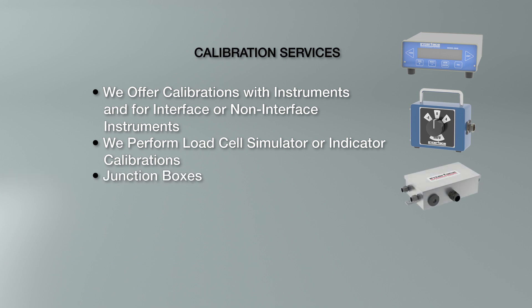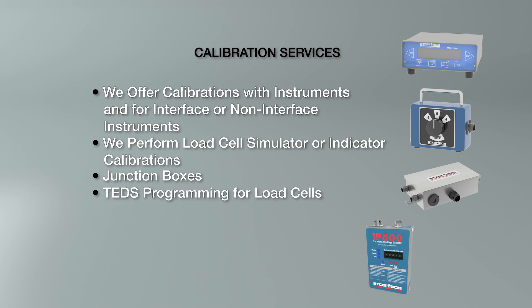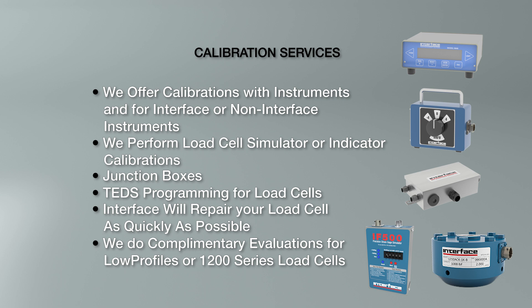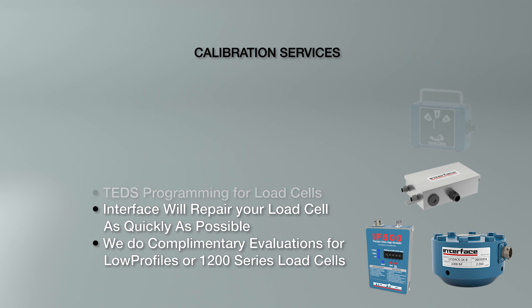Junction box calibrations are available for multiple load cell systems using a summing box, and we offer TEDS programming for load cells that have the TEDS self-ID chip. Interface repair services — we can repair your load cell as well. We try to turn repairs around as quickly as possible, understanding that your requirements are demanding. We offer a complimentary evaluation of the load cell bridge and complete repair services for Interface load cells, including low-profile or 1200 series style load cells. This covers diaphragm replacement, connector and connector protector replacements or retrofits, re-zeroing within reason, inert gas purge and backfill for applicable models, connector replacement for any manufacturer's load cells, cable repairs, and TEDS self-ID retrofits.